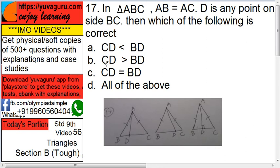Next, CD greater than BD. Is this possible? Yes. If D is near B, then what will happen? CD greater than BD.